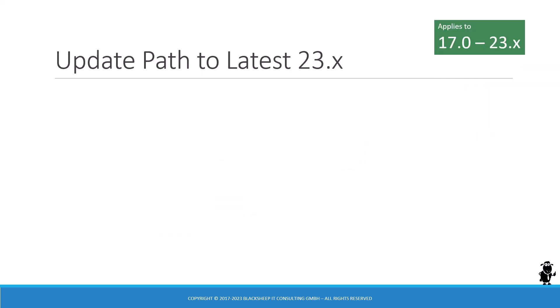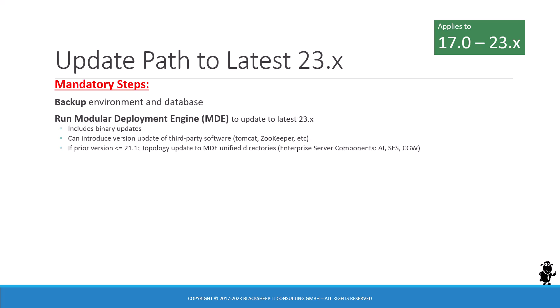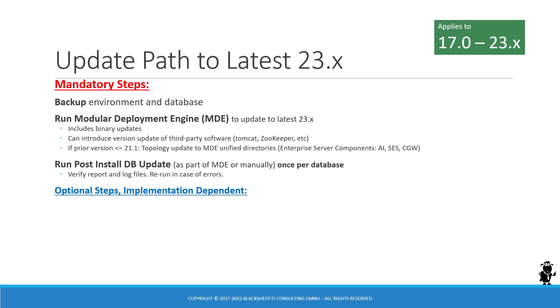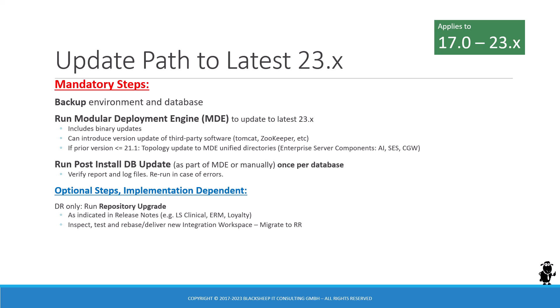Let's dive into the update paths. There are a few mandatory steps you have to take. You must back up your environment database, then run what's known as the Modular Deployment Engine, or MDE, which handles all the binary updates. Then you run the post-install database update, which is mandatory and updates your database schema, seed data, and manifest data with the mandatory changes Oracle has developed since your last version. There are also a few optional steps, depending on your implementation, such as running the repository upgrade, based on information from Oracle in the release notes or Bookshelf.